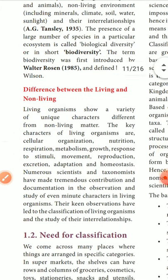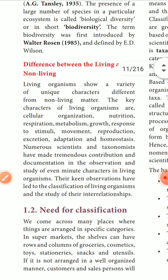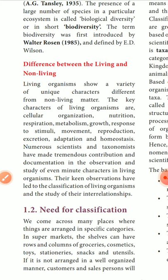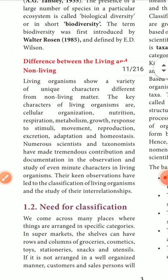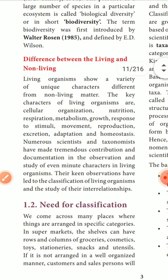What is the difference between living and non-living things? Living things have a variety of unique characters different from non-living things. The characters of living things include: cellular organization, mutations, respiration, metabolism, growth, stimuli response, movement, homeostatic condition, excretion, reproduction, and adaptation. These are the key characters of a living thing.